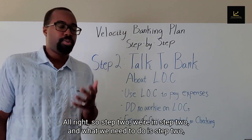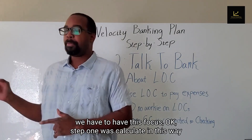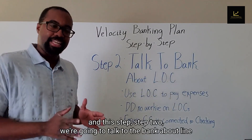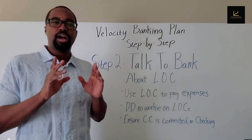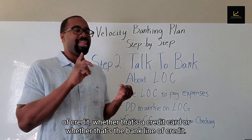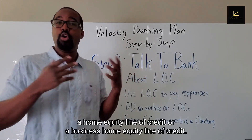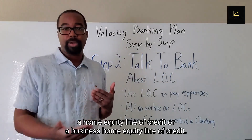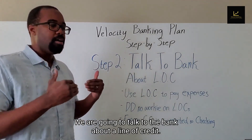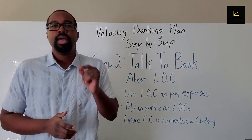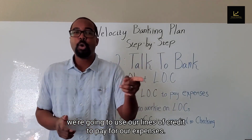Step two: we need to talk to the bank about a line of credit — whether that's a credit card, a bank line of credit, a business line of credit, or a home equity line of credit. This is so crucial because we're going to use our lines of credit to pay for our expenses.